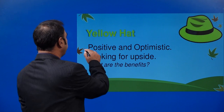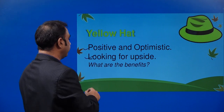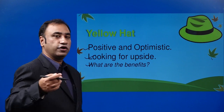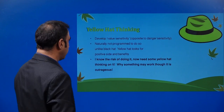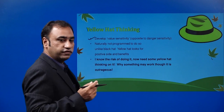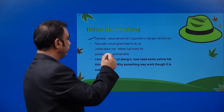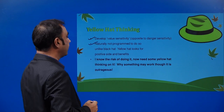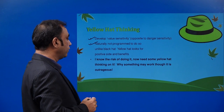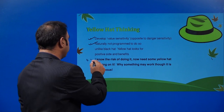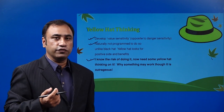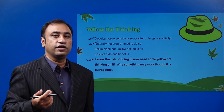Yellow hat — positive and optimistic. Looking for the upside, what are the benefits? Yellow hat will always look at the optimistic, positive side and tell you what the benefit is beyond this point. It develops value sensitivity, opposite to danger sensitivity. Unlike the black hat, yellow hat looks for positive sides and benefits. On the black hat you think: why won't it work? On the yellow hat you start thinking: why will this work?